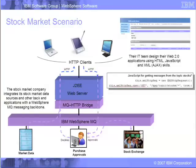This, of course, is where the new MQ HTTP bridge comes in. It enables us to connect the IBM WebSphere MQ backbone to these web applications via any J2EE web server — in our demo, IBM WebSphere Application Server Community Edition. This enables a web client to connect using HTTP into the web server, and the requests that are posted are mapped to the queues and topics on the IBM WebSphere MQ backbone, so core backend applications can feed stock market data onto topics, accessed via plain HTTP and JavaScript AJAX.